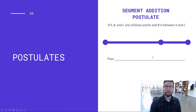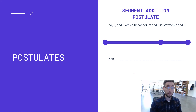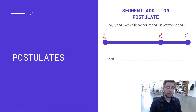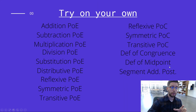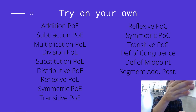Segment Addition Postulate: if A, B, and C are collinear and B is between A and C, then the distances add up accordingly. This postulate deals with distances along a segment.